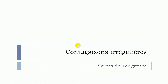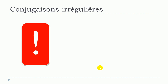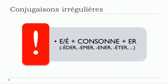In this lesson we'll see les conjugaisons irrégulières and we'll focus on verbs from the first group — a specific category of verbs ending with either E or E accent aigu, then une consonne, then ER. Examples include endings like Édée, Émée, Énée, Étée, and many others that follow the rule we will see here.